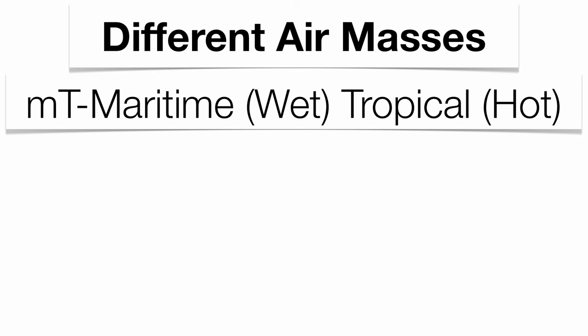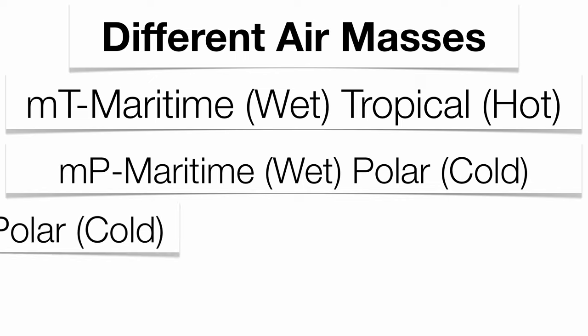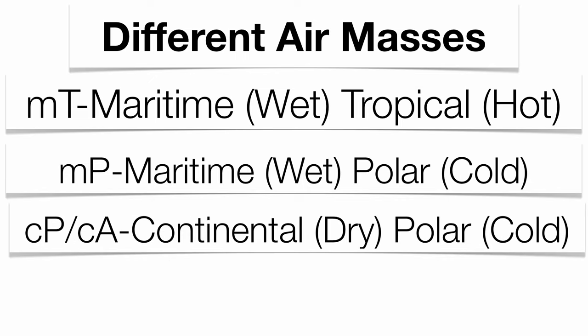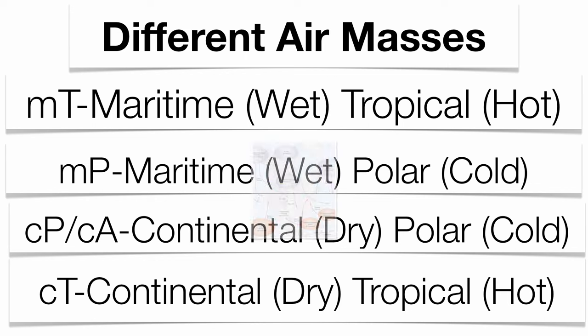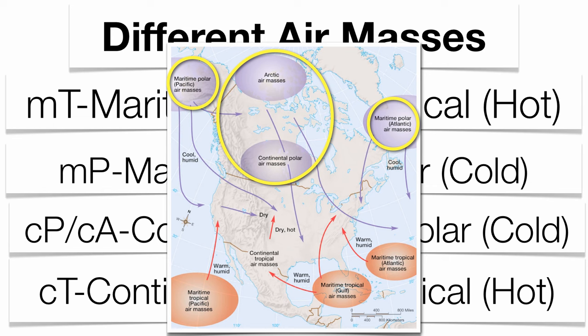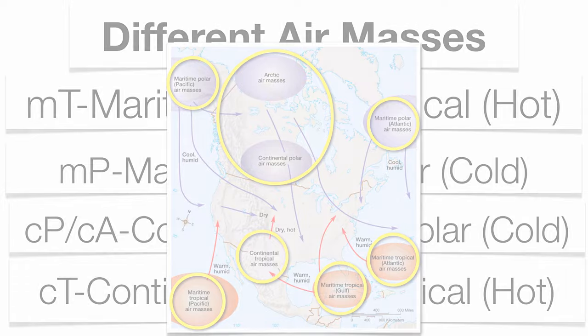There are different air masses within the continental United States and North America that collide and interact. You have MT air masses, which are maritime tropical. You have MP air masses, which are maritime polar. CP or CA air masses, which are continental Arctic or continental polar. And CT air masses, which are continental tropical. Some are wet, some are dry, some are hot, some are cold. Each air mass gets its characteristics from the source region it comes from. If your air mass forms over the northern Pacific, it's maritime polar. Over Canada, continental polar or continental Arctic. Over the southern Pacific, Gulf of Mexico, or southern Atlantic, maritime tropical. And in the continental U.S. around the Four Corners region or Mexico, continental tropical.